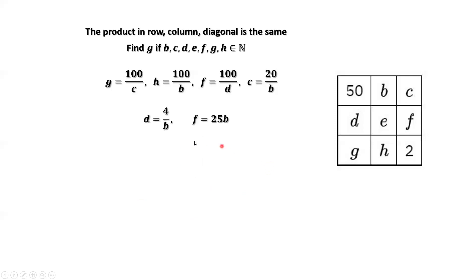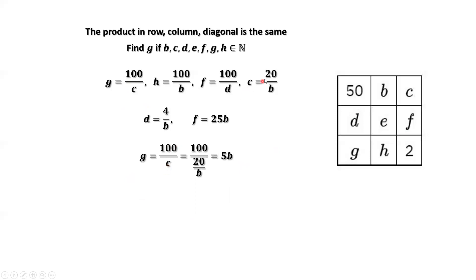We now have six results. What is G? G equals 100 divided by C. Since C equals 20 over B, we plug in C and simplify. We have G equals 5B.